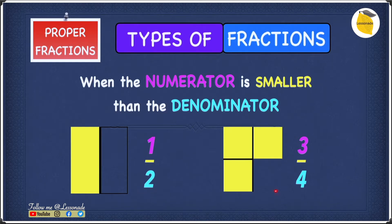And over here, we have 3 as our numerator, and 3 is definitely smaller than 4, which is our denominator. So 3 over 4 is also a proper fraction.